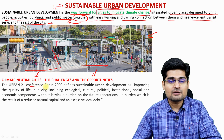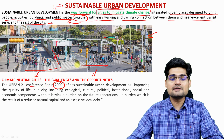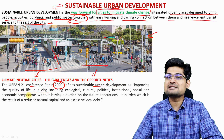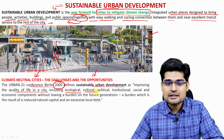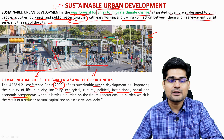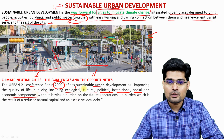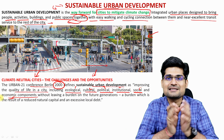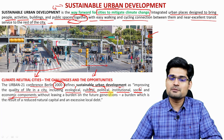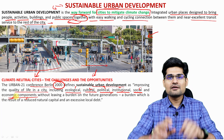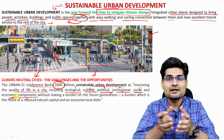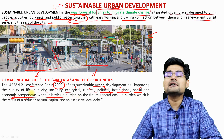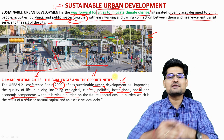The Urban 21 Conference in Berlin in 2000 defined sustainable urban development as: improving the quality of life in the city, including ecological, cultural, political, institutional, social, and economic components — six components in total. When all these six components work in tandem, that is when sustainability is achieved, without leaving a burden on future generations.